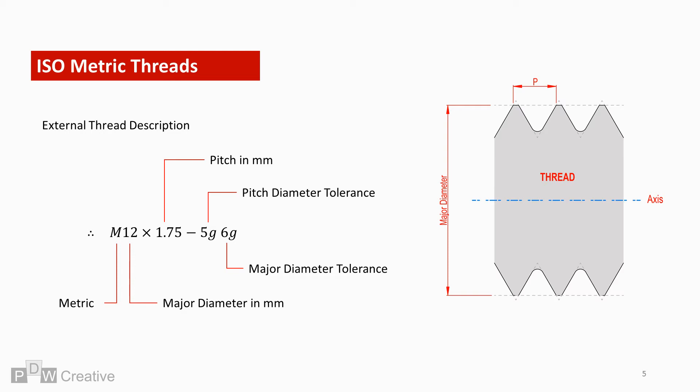We say negative as the thread cannot be larger than the basic or standard profile, otherwise it would interfere with the internal thread associated with the nut, so any tolerance is based on a reduction in size.